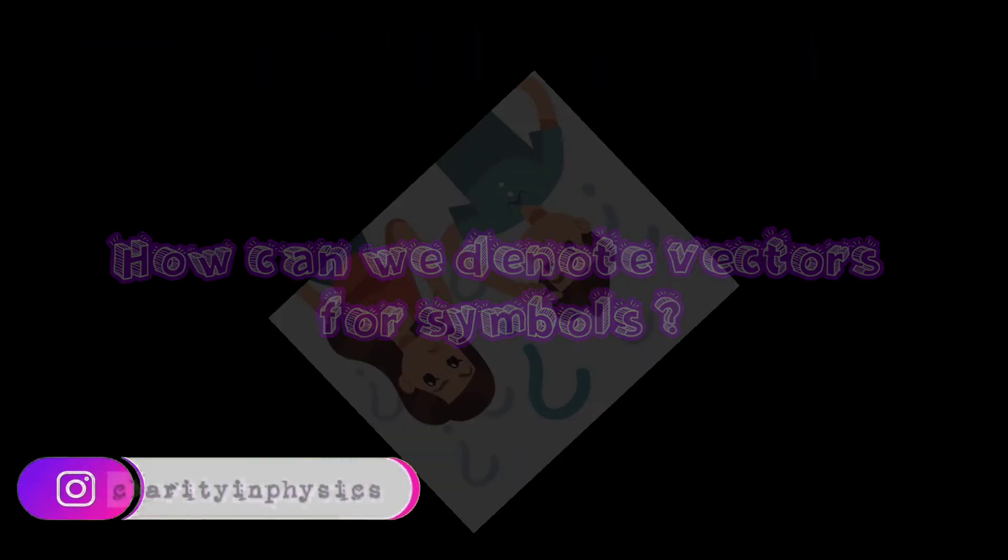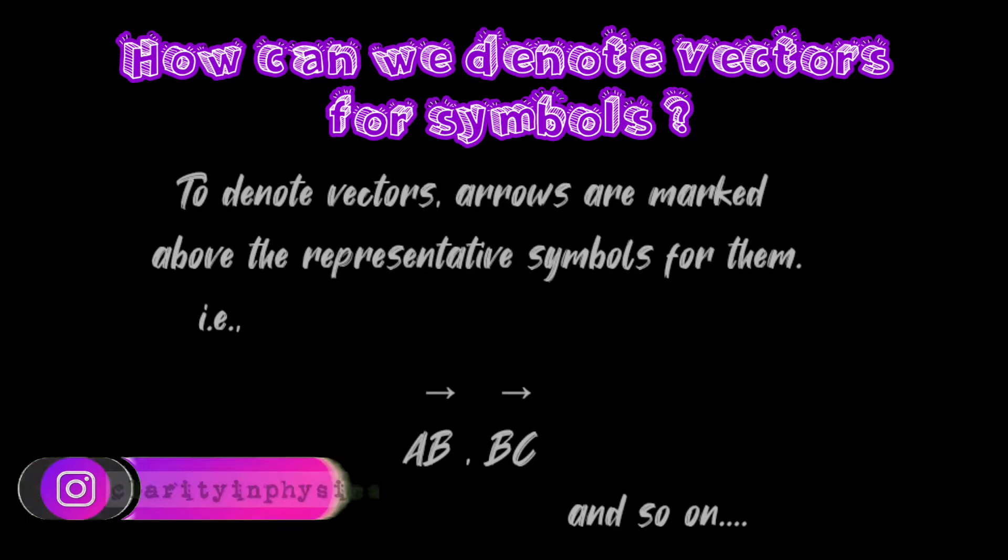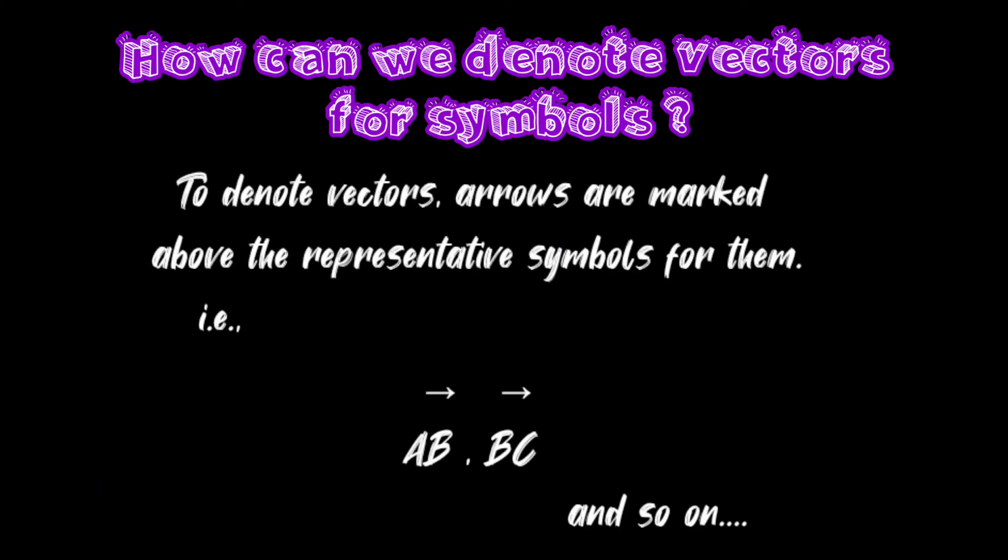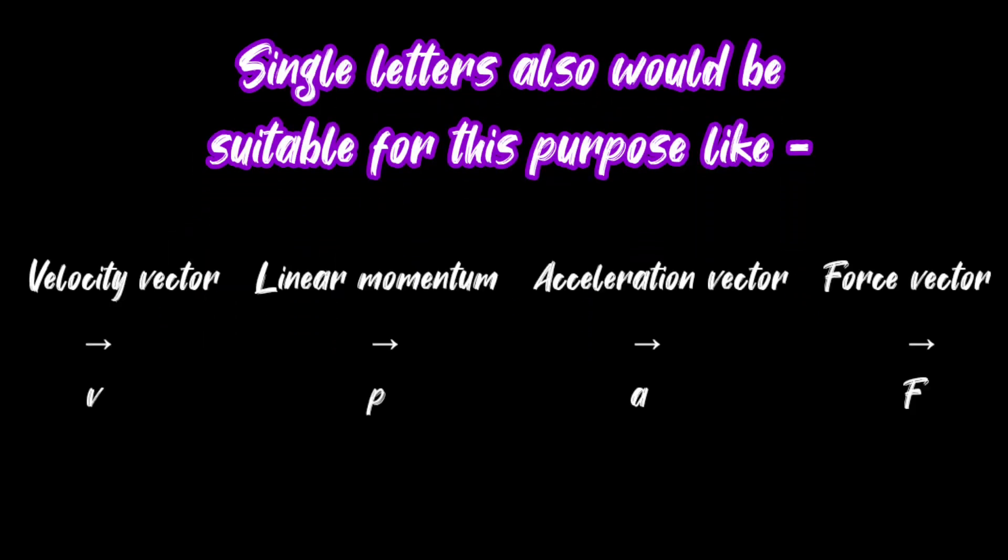How can we denote vectors? For symbols to denote vectors, arrows are marked above the representative symbols. The abbreviation of velocity is small v, and it is a vector quantity, hence it is denoted by an arrow marked above the representative symbol. Similarly, the linear momentum, the acceleration, and the force are denoted by p vector, a vector, and F vector respectively.